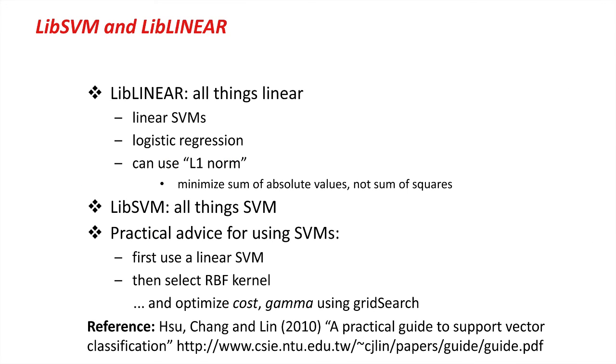Here's a summary. We've looked at lib-linear, which does all things linear. Linear SVMs, logistic regression. It can use the L1 norm, which minimizes the sum of absolute values, not the sum of squares, which has big advantages under certain conditions, and is very fast. Lib-SVM is all things SVM, linear and nonlinear SVMs. The practical advice when you want to use SVMs is, first, use a linear SVM. Do it quickly with lib-linear, perhaps, and see how you get on. Then, for a nonlinear SVM, select the RBF kernel. But when you select a nonlinear kernel like RBF, it's really important to optimize cost and gamma. You can do this using the grid search method. Here's a reference to support vector machines to these packages.